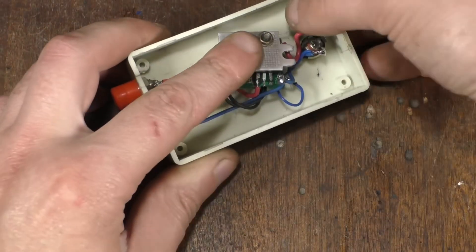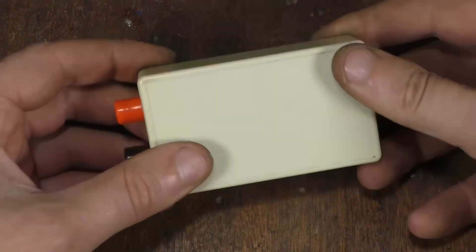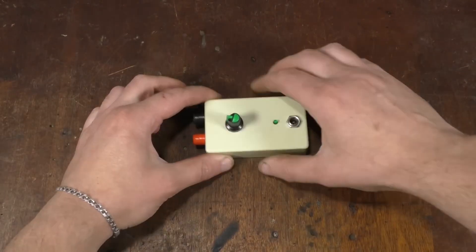We place the board and close the cover. We put the knob on the variable resistor and the do-it-yourself project is finished.